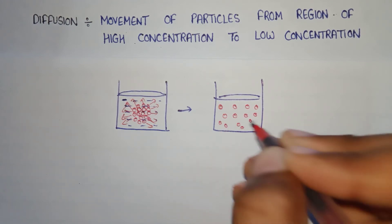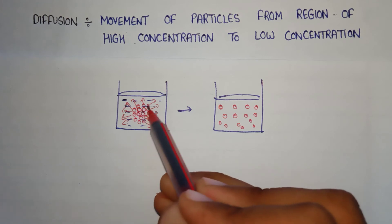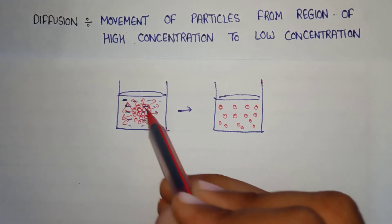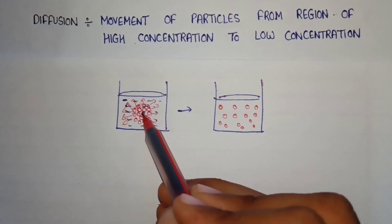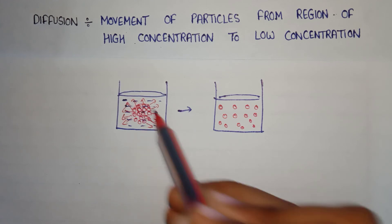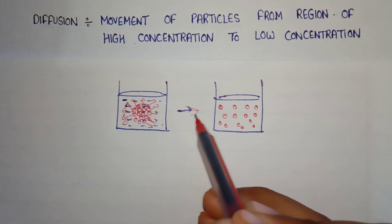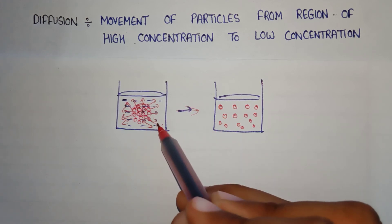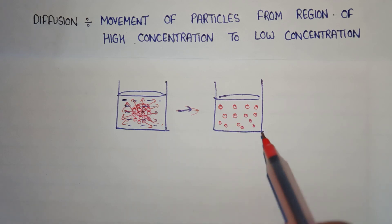What happens here is diffusion, because the solute concentration was high in the middle and low elsewhere, so particles moved from high concentration to low concentration, forming a uniform solution. This is diffusion.